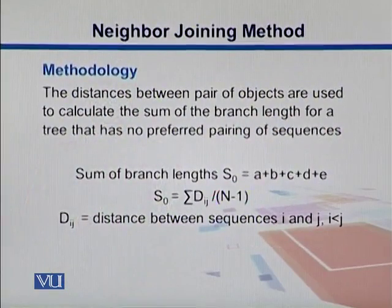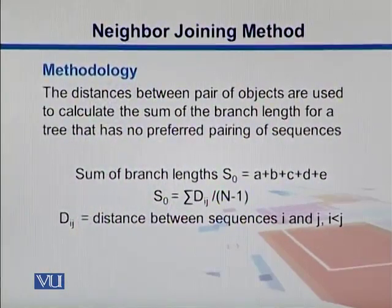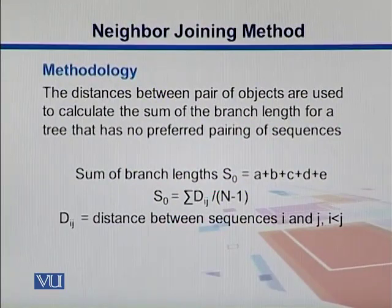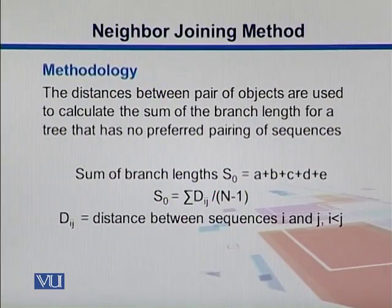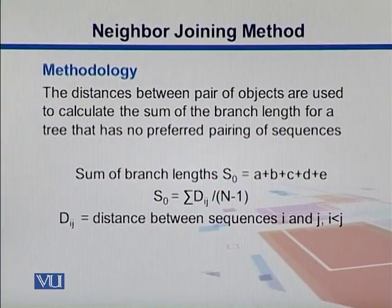Here is the overall methodology. The distance between pairs of objects are used to calculate the sum of the branch lengths for a tree that has no preferred pairing of sequences. Sum of the branch lengths is given by S0, which equals A plus B plus C plus D plus E. It's the summation over all branch lengths, and this S0 can be correlated with the distances between different sequences with this equation. The distance Dij is between sequences I and J, such that I is less than J.